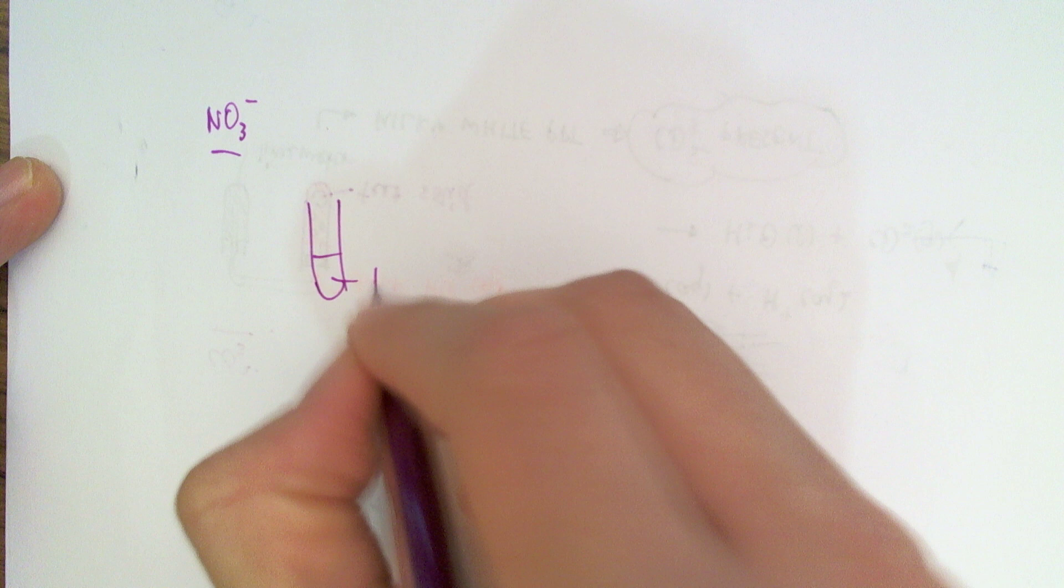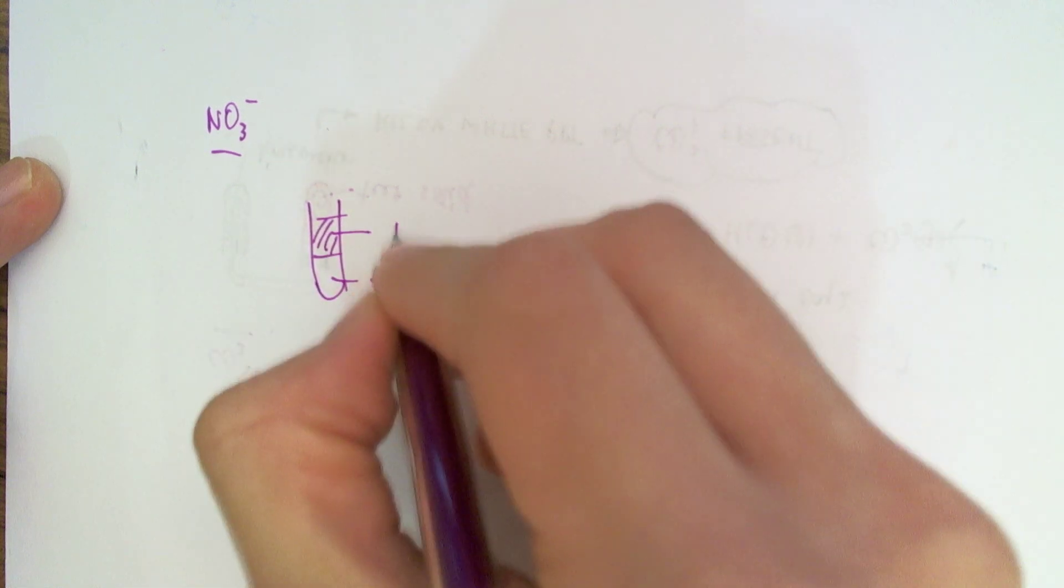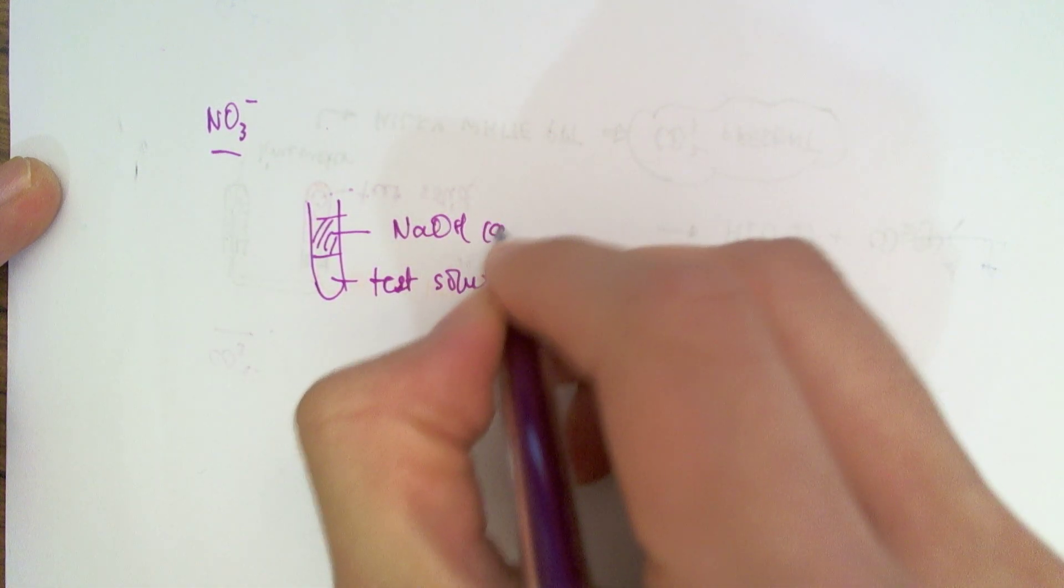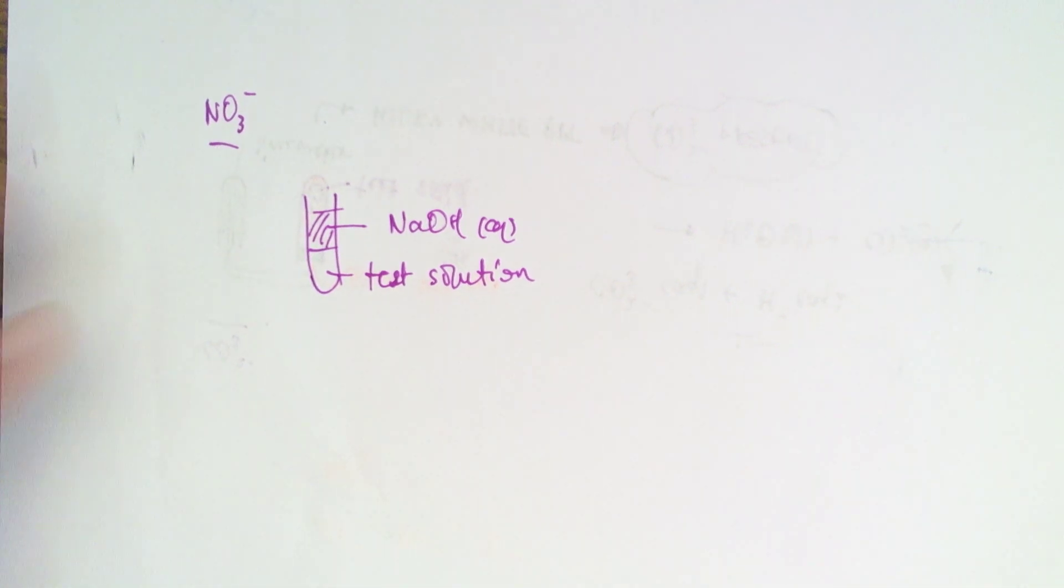Finally, we'll look at how to test for nitrates. Nitrates, unlike all of the preceding tests, this is going to take place in an alkaline medium. So I'm going to put some sodium hydroxide in this to prepare my solution for the test.